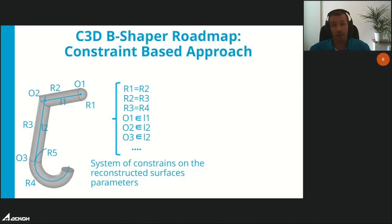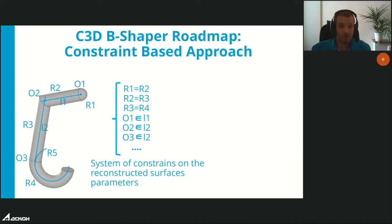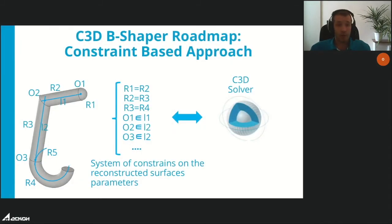The second, more complicated approach is based on constrained fitting. After surface fitting, various engineering constraints are detected — B-Shaper tries to recognize the most likely constraints using initial parameters of fitted surfaces, selecting groups of relevant surfaces that are likely to be parallel, orthogonal, share common axis and direction, etc. Constraints are enforced as a post-process by changing surface parameter values, converting all problems into solving a large system of non-linear algebraic equations using C3D Solver. This option is currently under development.